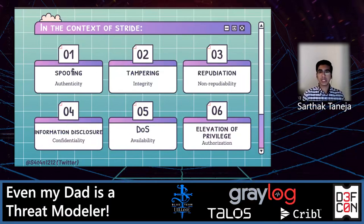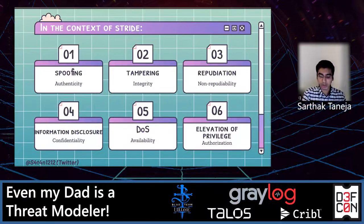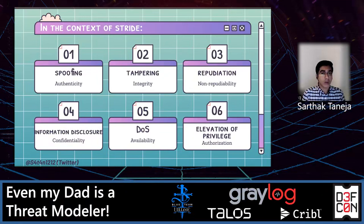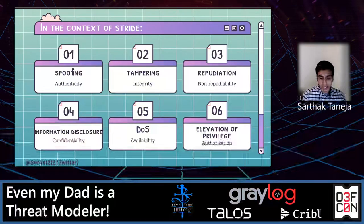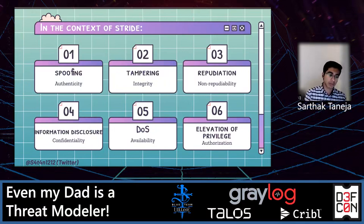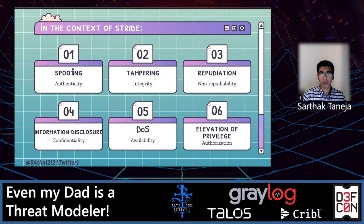Then we have repudiation. Repudiation gets a bit complicated — repudiation can cause non-repudiation issues, which is when you cannot backtrack the malicious actions of a user to a particular individual. For example, if you have an application in your organization that can only have a single admin, and you have three system administrators all using a single set of credentials — if one of them is an insider threat and performs a malicious action, you cannot use the audit logs to backtrack the activity to the malicious user because all three are using the same credentials. When there's no repudiation, logs become useless, and it is considered a risk.